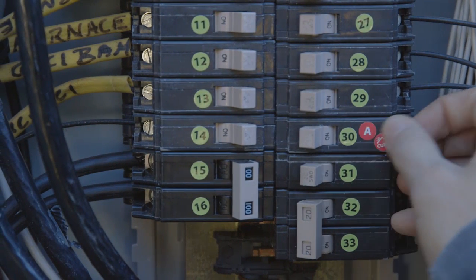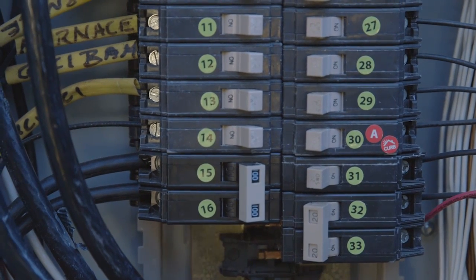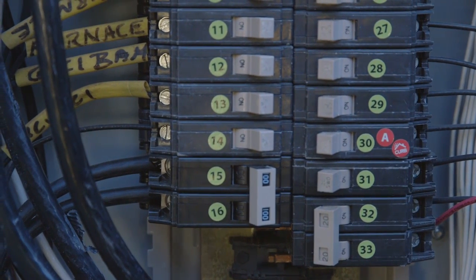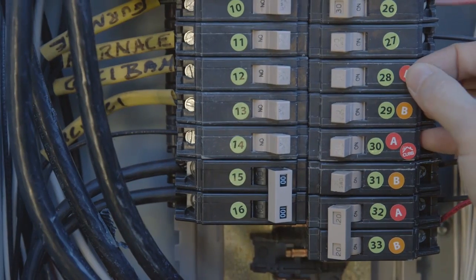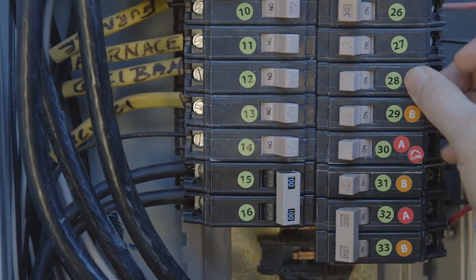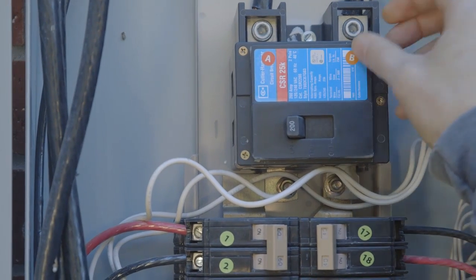Then label all the other breakers with a B sticker. Label all the A phase breakers and the A phase main with red A stickers, and label the B phase breakers and main with orange B stickers.